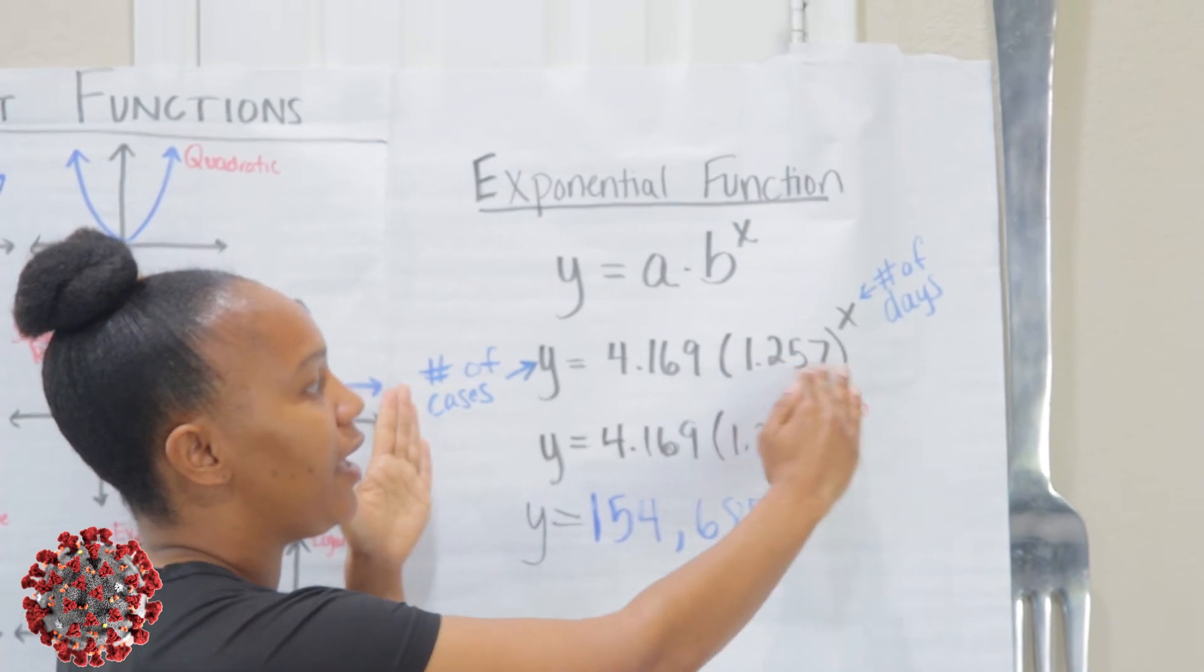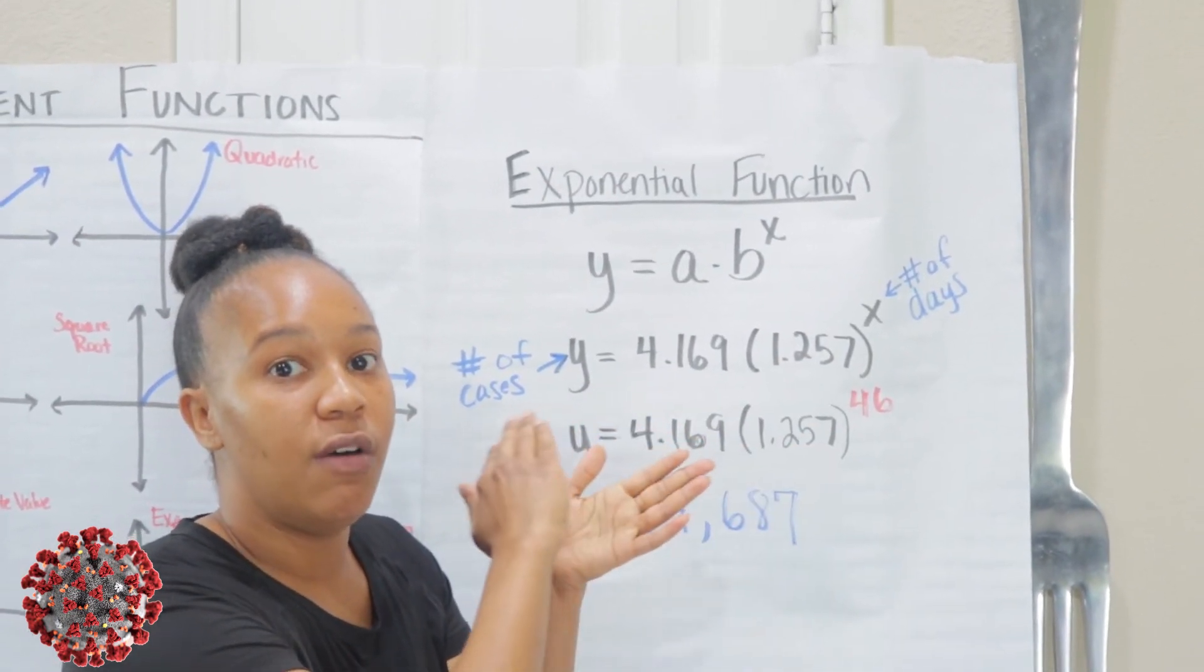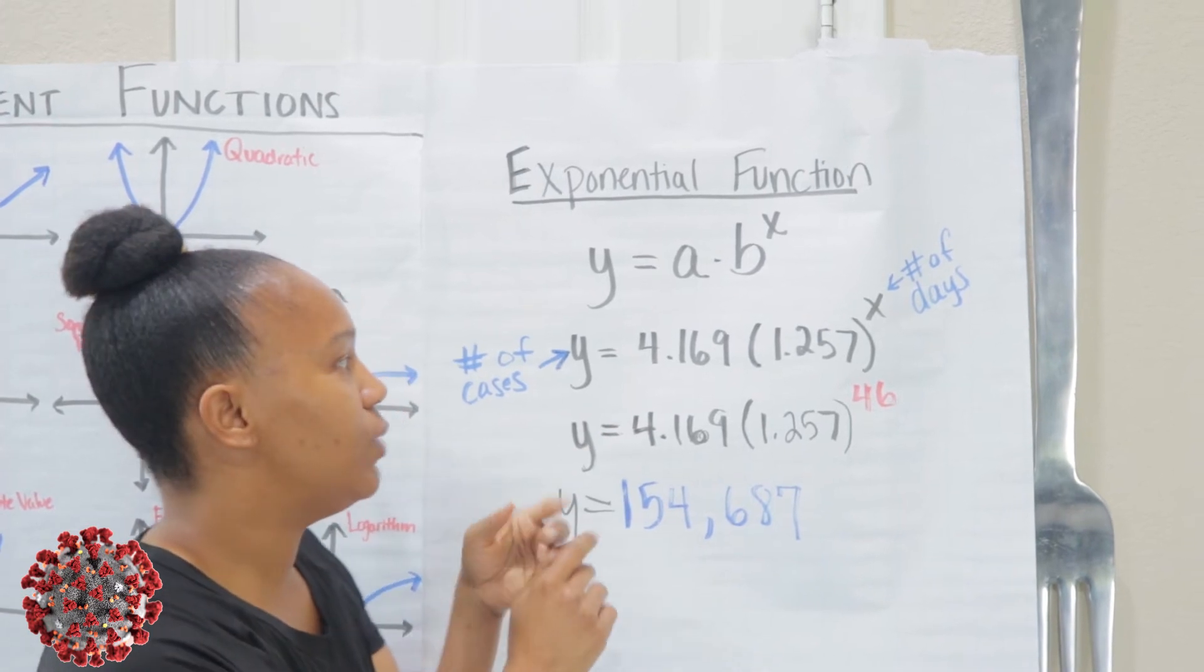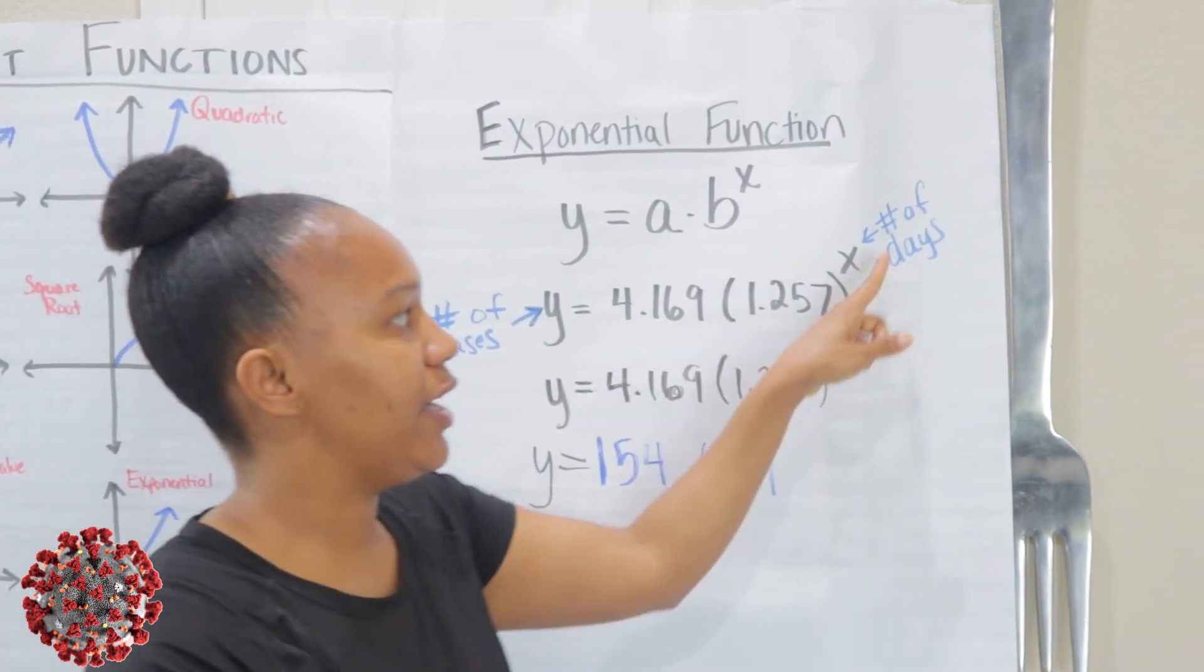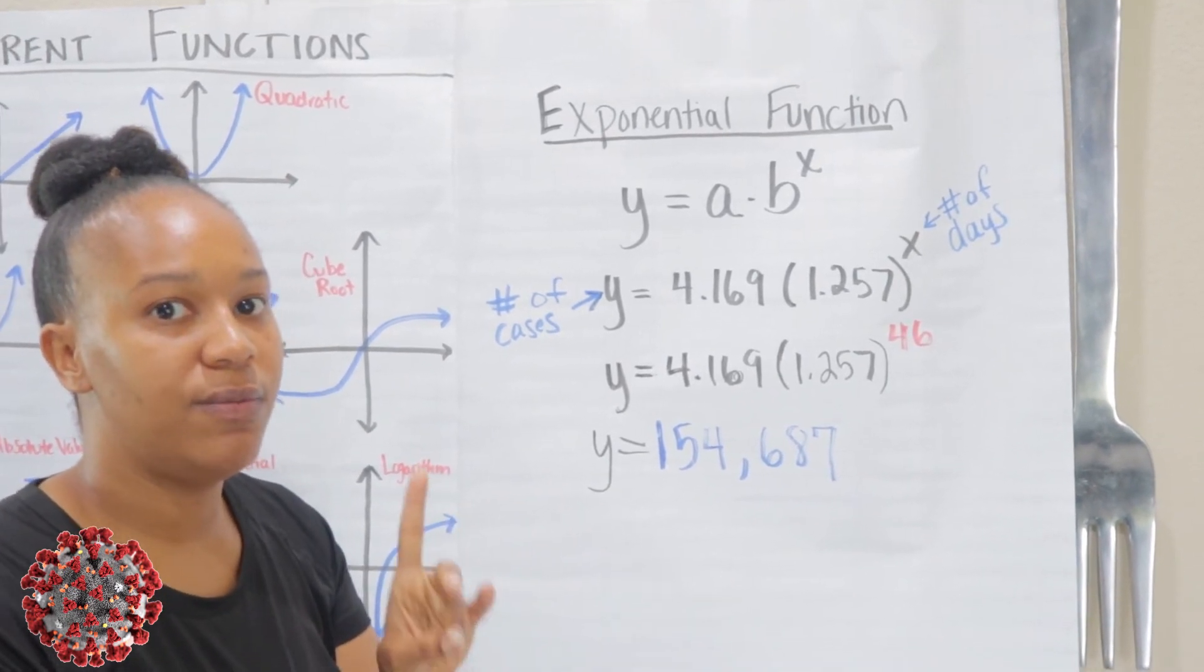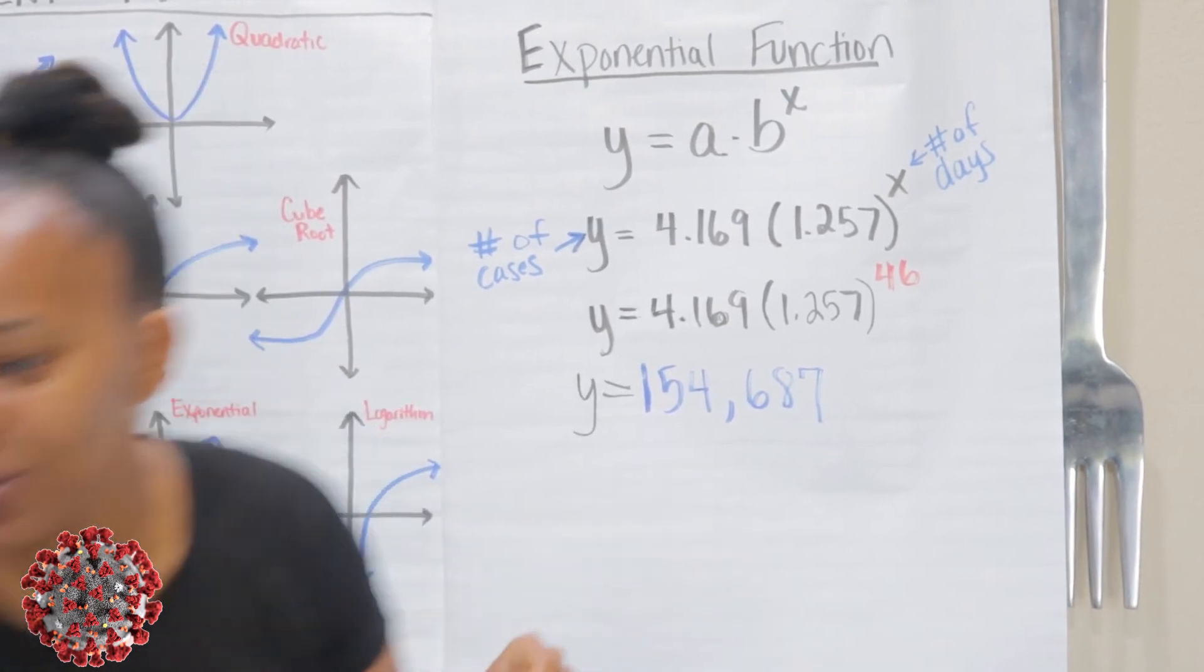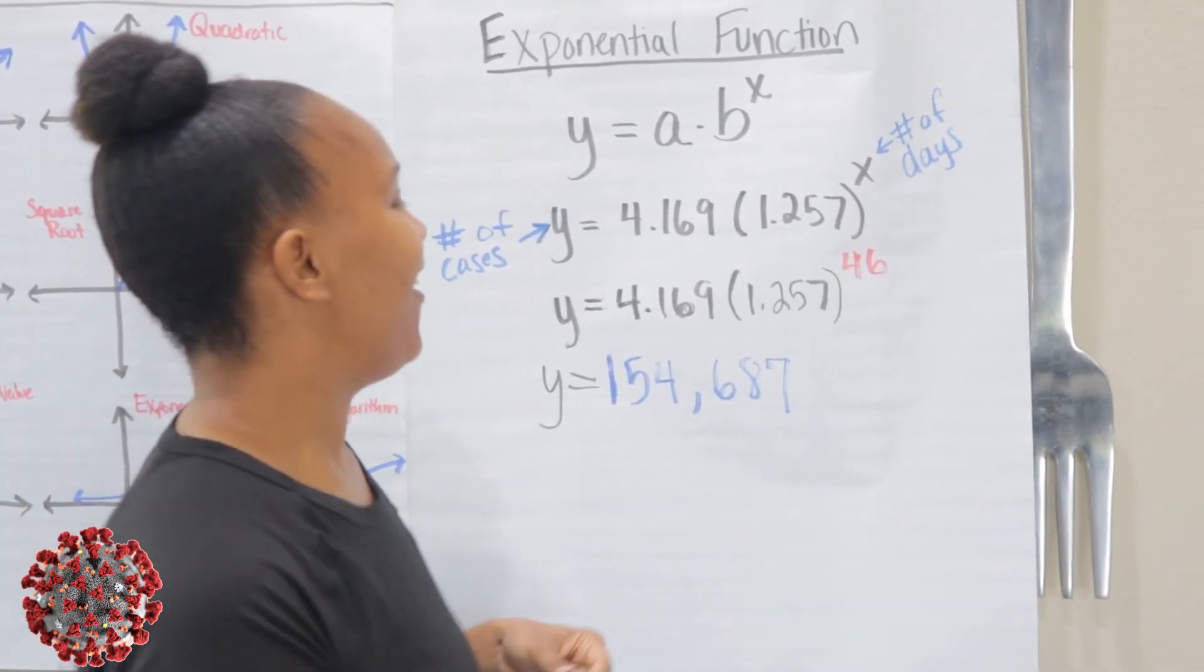And so this gives me my equation, my exponential equation that models the growth of the number of coronavirus cases in the US. y represents the number of cases. Again, x represents the number of days, where day one is, whatever the first day was, I forgot what was it, February 20, February 15, my bad.